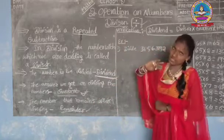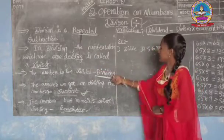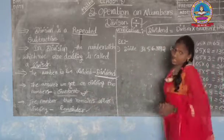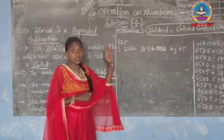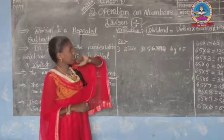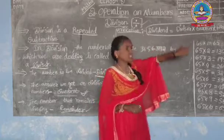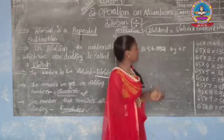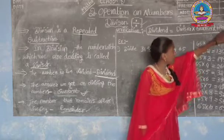These are the terms in division — divisor, dividend, quotient, and remainder. Now let us see verification. In this division, we are verifying whether the given answer is correct or wrong. This is the verification statement: Dividend is equal to divisor into quotient plus remainder.